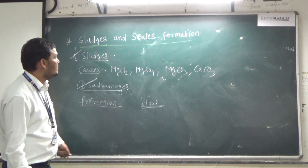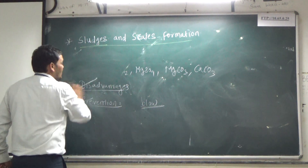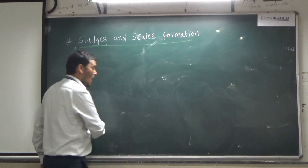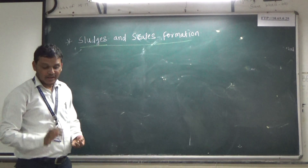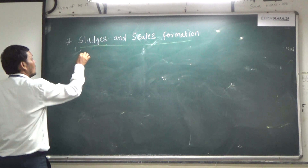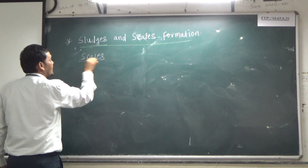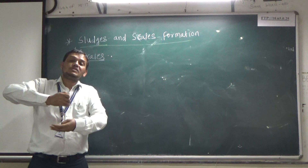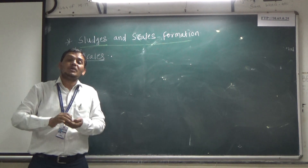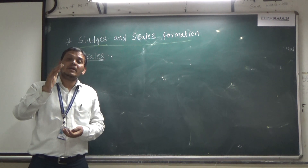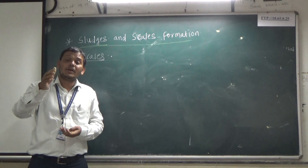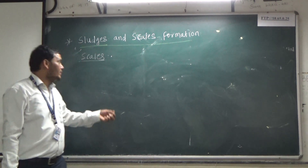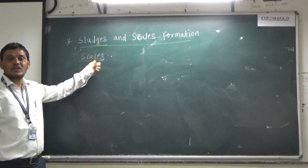The next important point is scale. Scale means: due to steam generation there is a formation of a hard, tough, thick layer coat or adherent coating at the inner surface of the boiler which is very difficult to remove. This is known as scale formation.